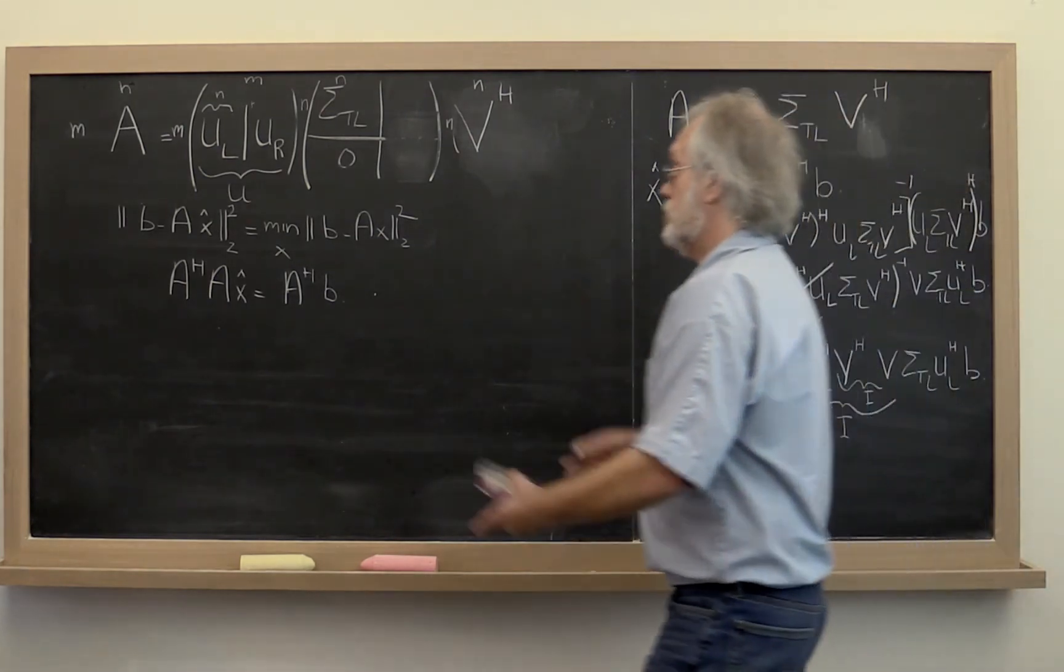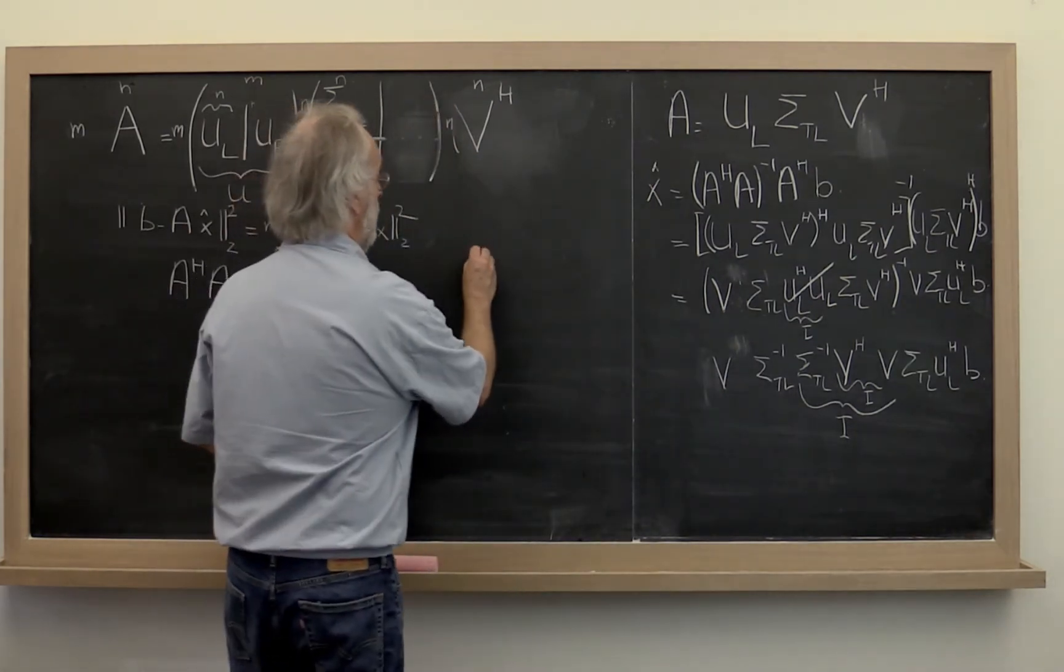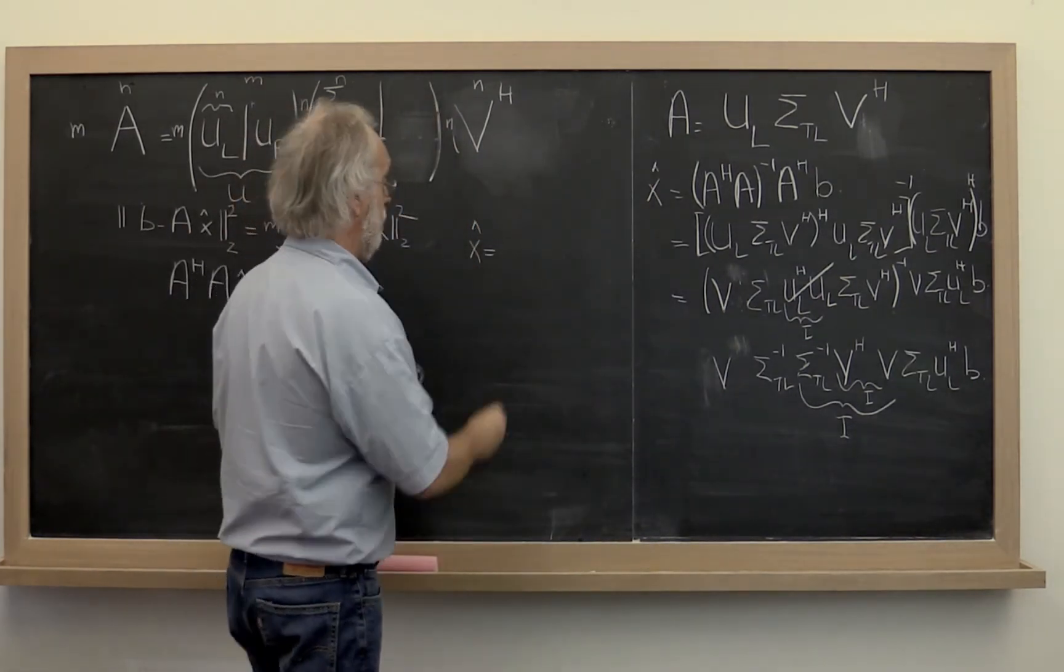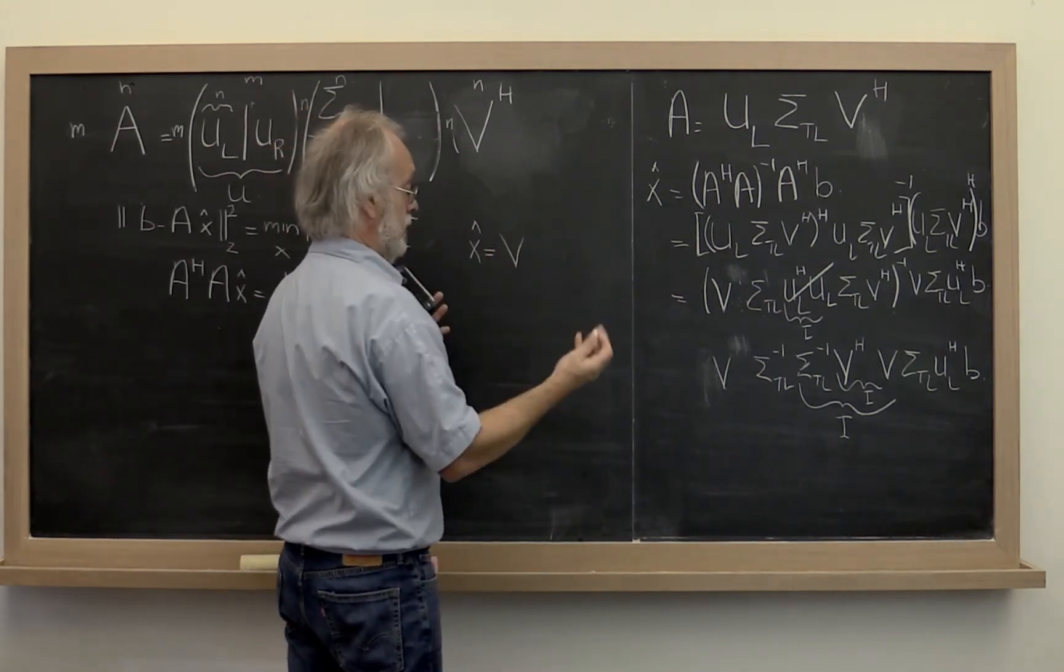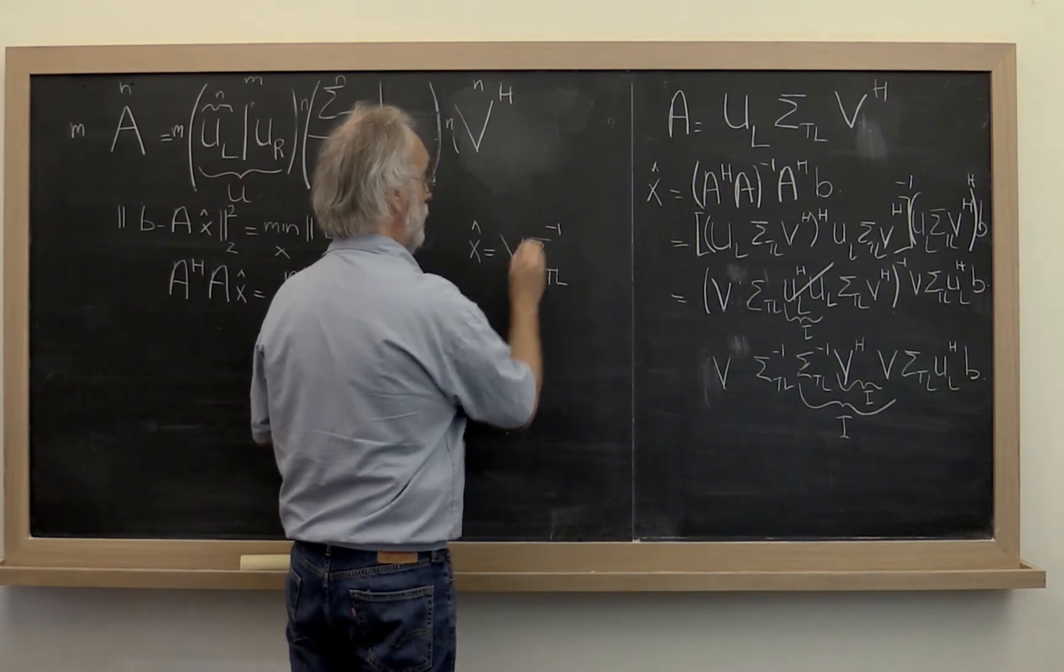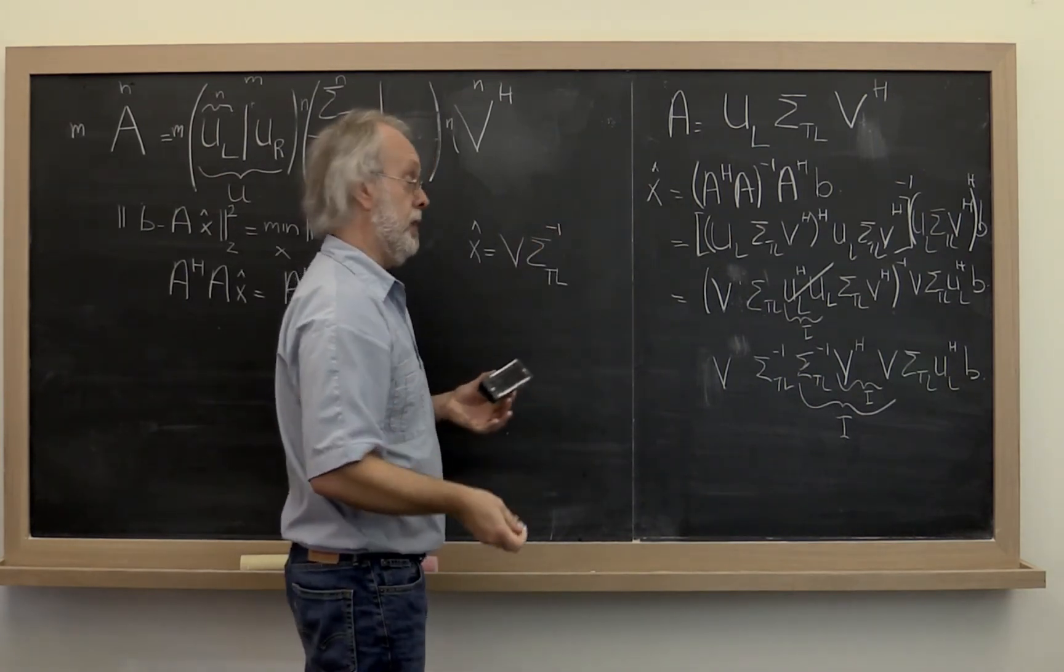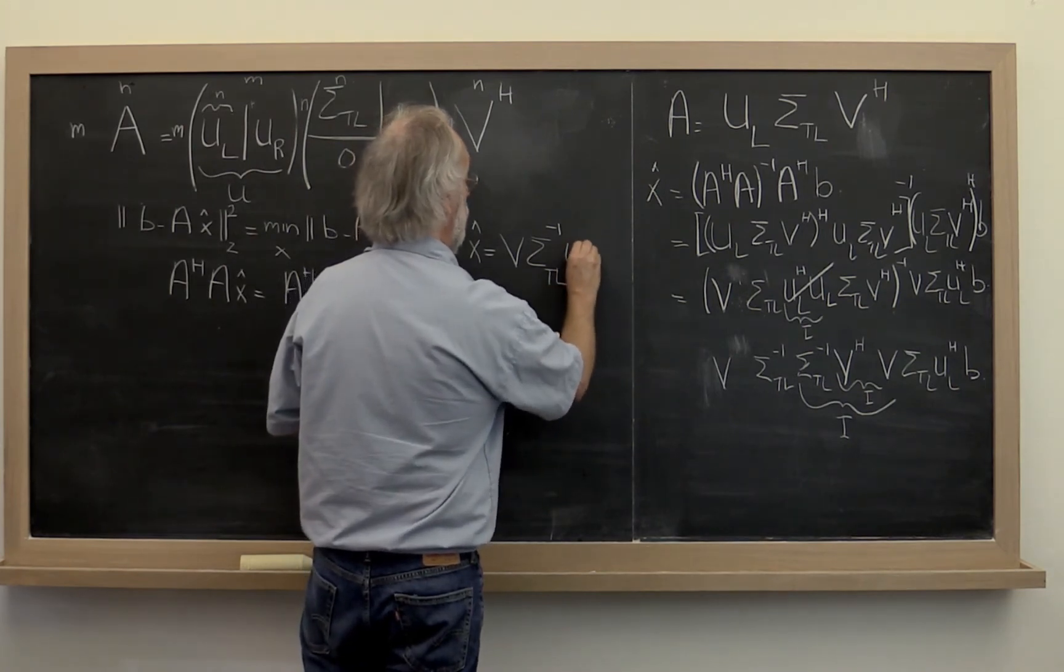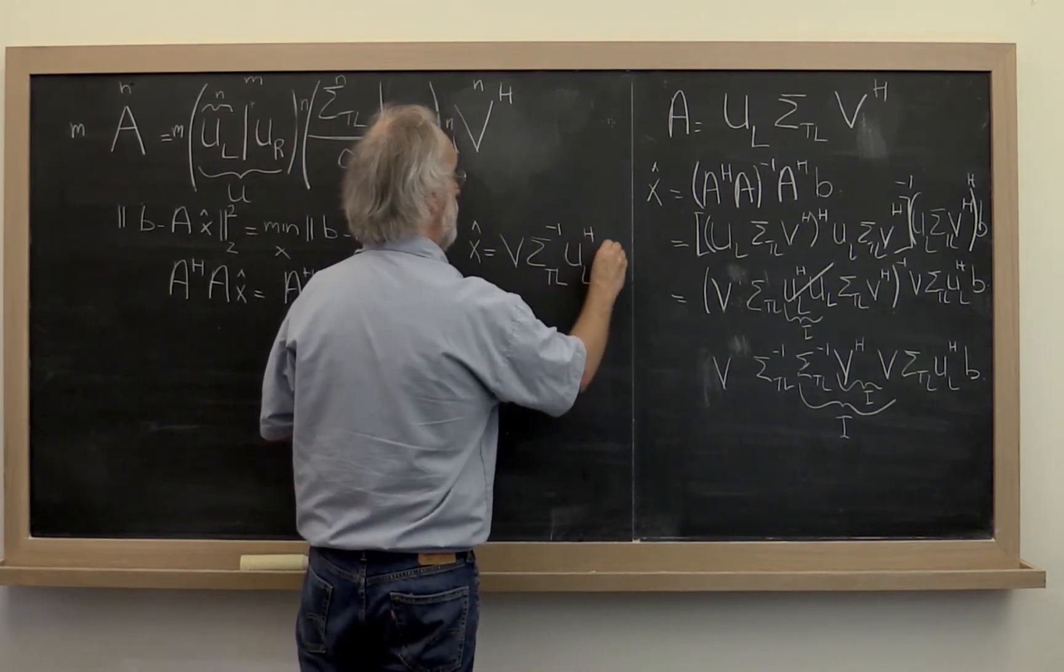So the solution to this problem can now be given by x hat is equal to V, the unitary matrix, times sigma, diagonal matrix. Invert it. Well, it's easy to invert a diagonal matrix. Times UL Hermitian transpose times B.